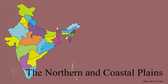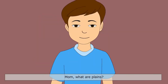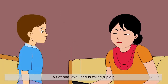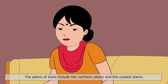The Northern and Coastal Plains. Mom, what are plains? A flat and level land is called a plain. Tell me more. The plains of India include the northern plains and the coastal plains.